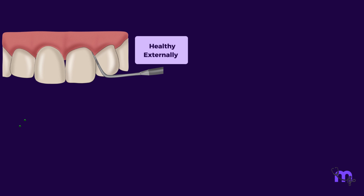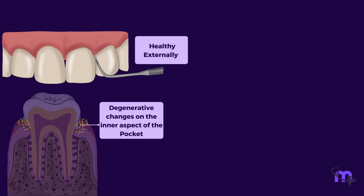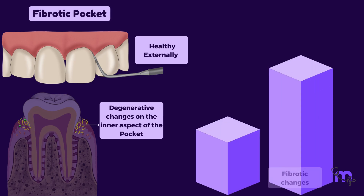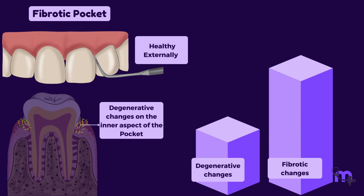Sometimes the gingiva appears healthy externally, but degenerative changes continue on the inner aspect. This type of pocket is called a fibrotic pocket. This is due to the domination of fibrotic changes over degenerative changes.